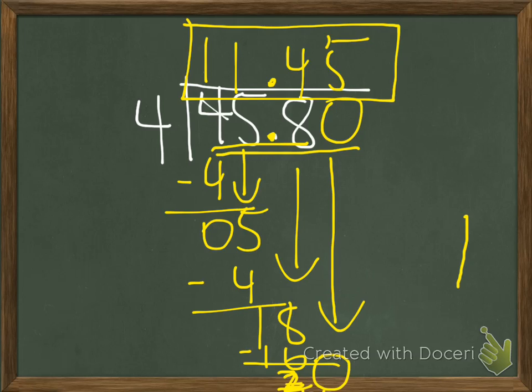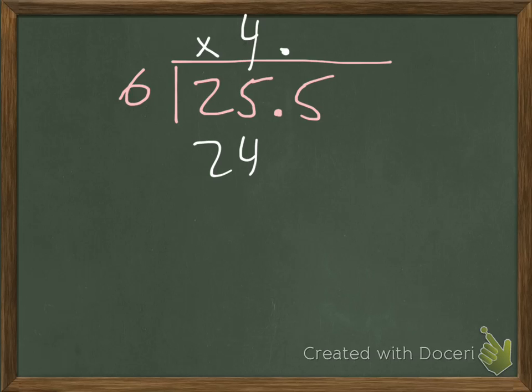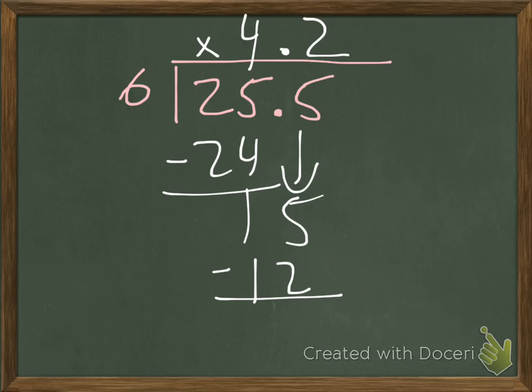One last example. Let's say we had 25 and 5 tenths ounces of trail mix that we were dividing equally into 6 bags. We would divide as we normally would. Since the decimal is there, we bring that decimal up and we divide. We multiply, we subtract, we check, we bring down, and we will be left with a remainder of 3.